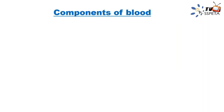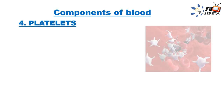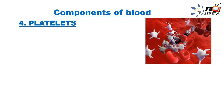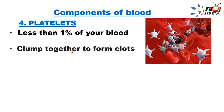The fourth component of blood are platelets. You can see platelets in the diagram. These also form less than 1% of your blood. Their function is that they club together to form clots, helping in blood clotting.